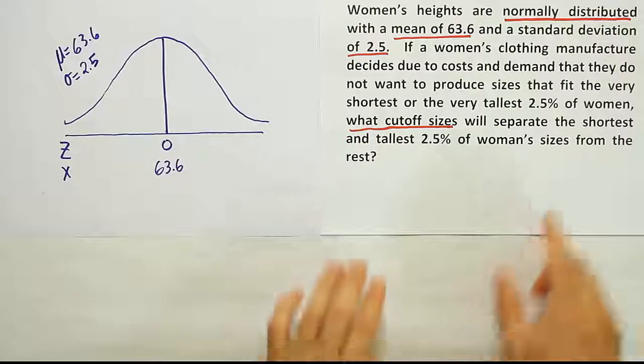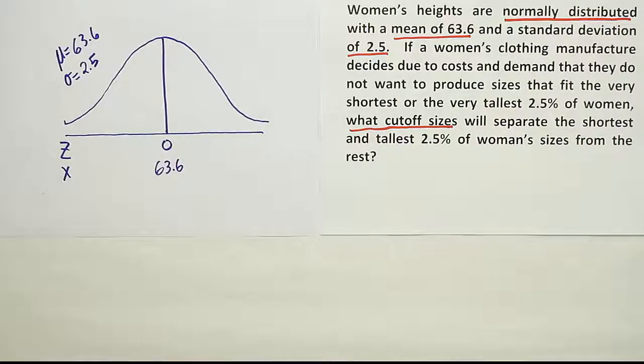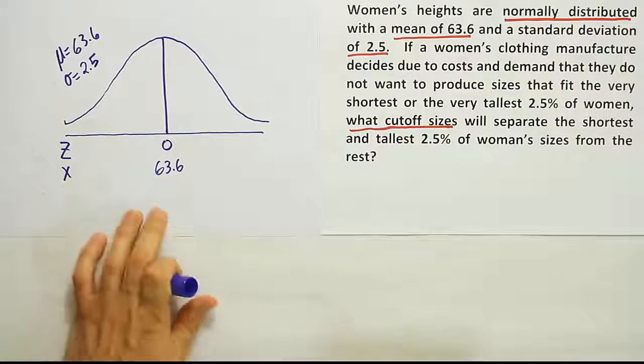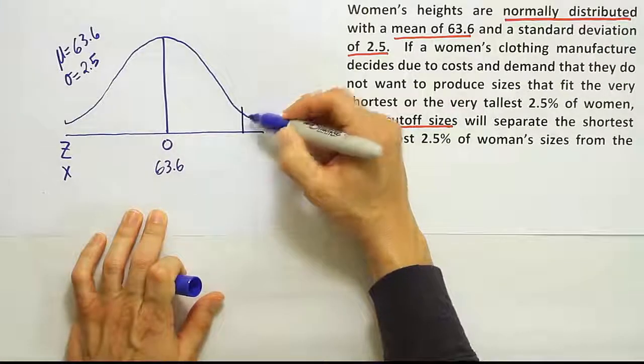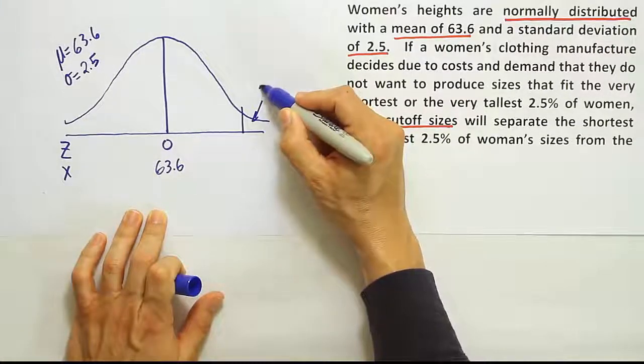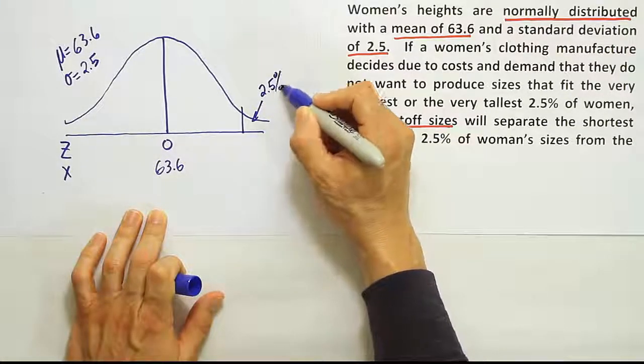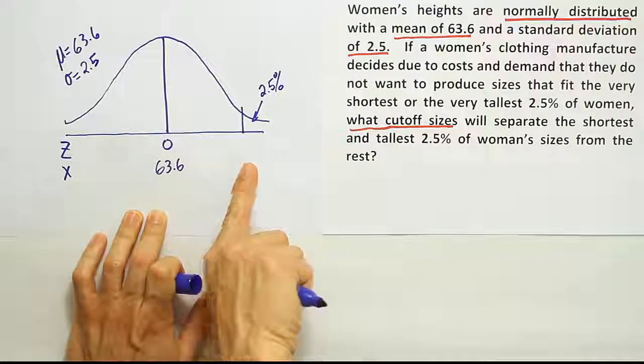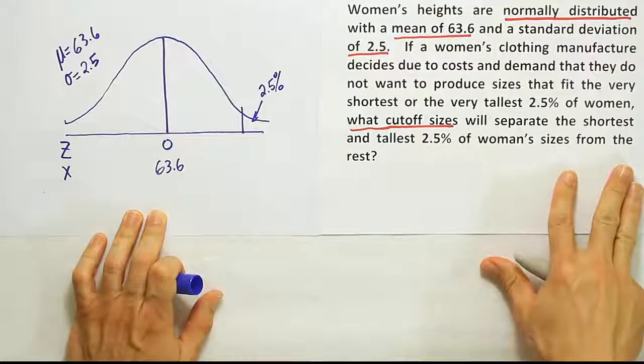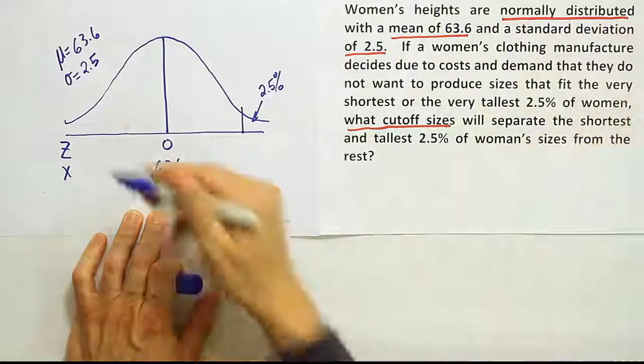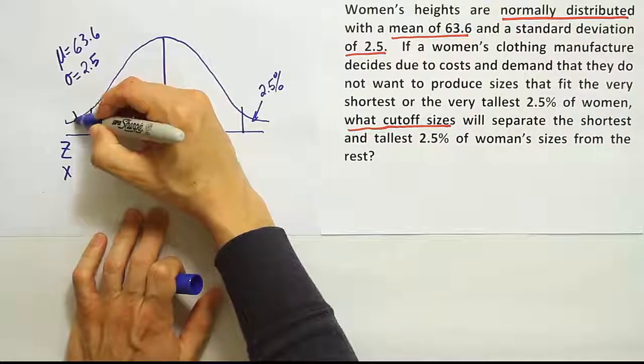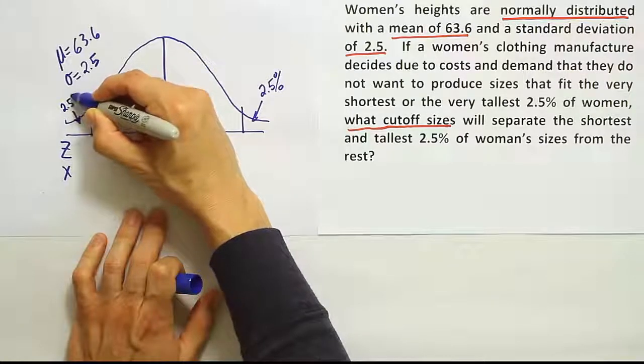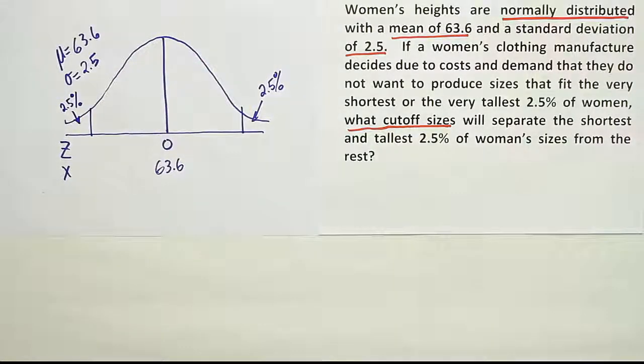The nice thing about that, if we're looking for the shortest and the tallest, we know we're going to be making a cut on each side of the curve. And of course, it would make sense that up here, this would be where the tallest 2.5% of women reside. So the height down here represents the starting point for the tallest 2.5% of women. And then on the other side, you have a cut that represents the shortest 2.5%. So two locations there on the curve that we're dealing with.